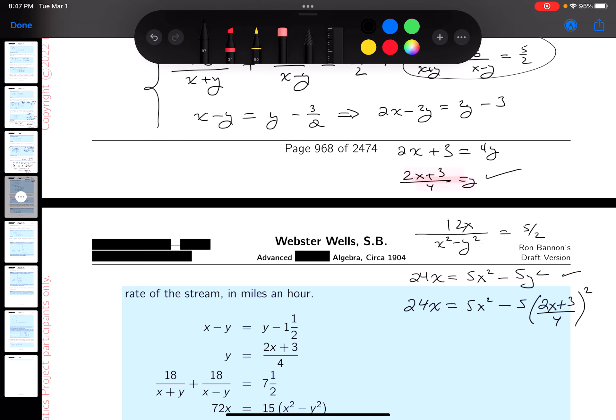I gotta do one step at a time. 24X equals 5X squared minus 5. You get 4X squared plus 12X plus 9, all over 16.